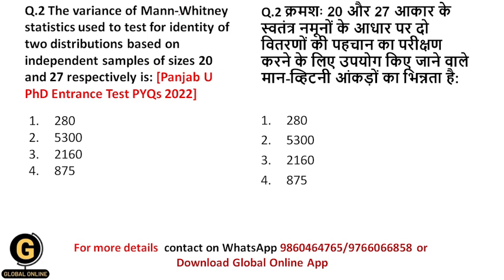The variance of the Mann-Whitney statistic used to test for identity of two distributions based on independent samples of sizes 20 and 27 respectively is. Based upon this information, we need to find out the variance.